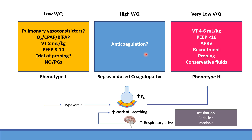You need to remember that the pathology is not discrete among these different abnormalities. Patients progress from Phenotype L to Phenotype H and go through stages, so you will see a mixture of pathology. At any time, patients may develop microthrombosis causing high VQ that alters gas exchange in the lungs.